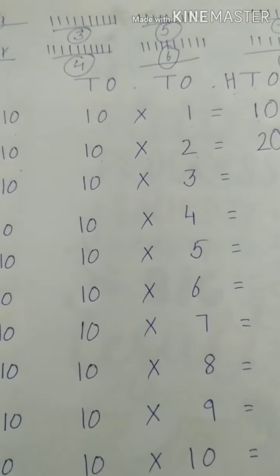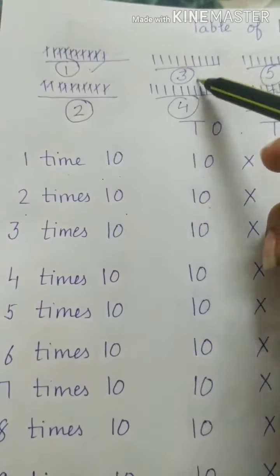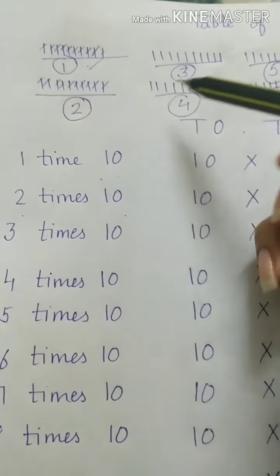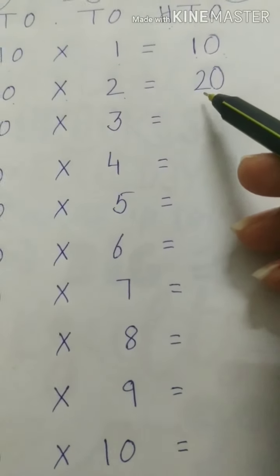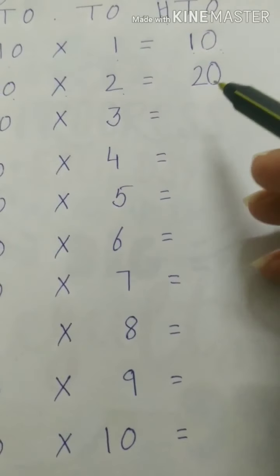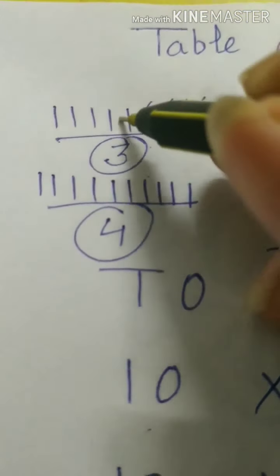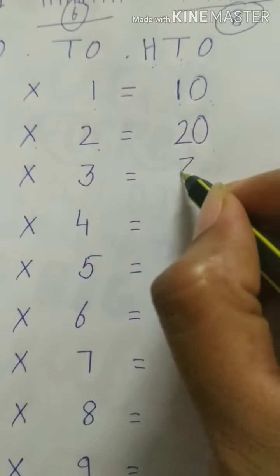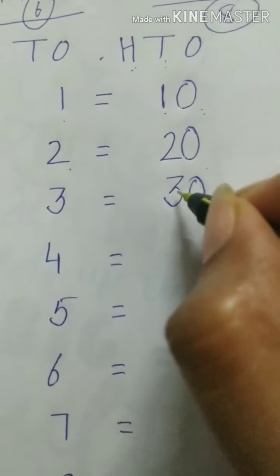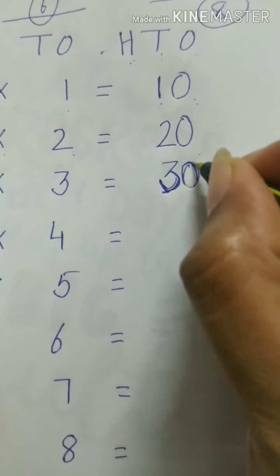Then 10 threes are means 3 times 10. In that case I need to take all these three sets together. First set, second set and third set. I will take them all together. Or I will add 10 more in 20. So after 20 let's start counting. 21, 22, 23, 24, 25, 26, 27, 28, 29 and 30. So we have got 30. We have got 30 at 10 threes are.